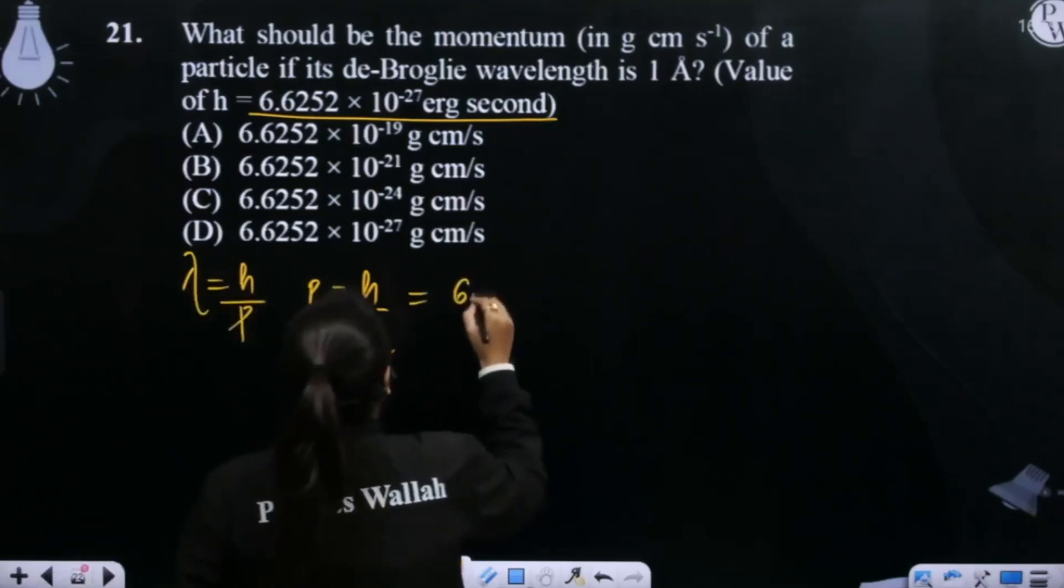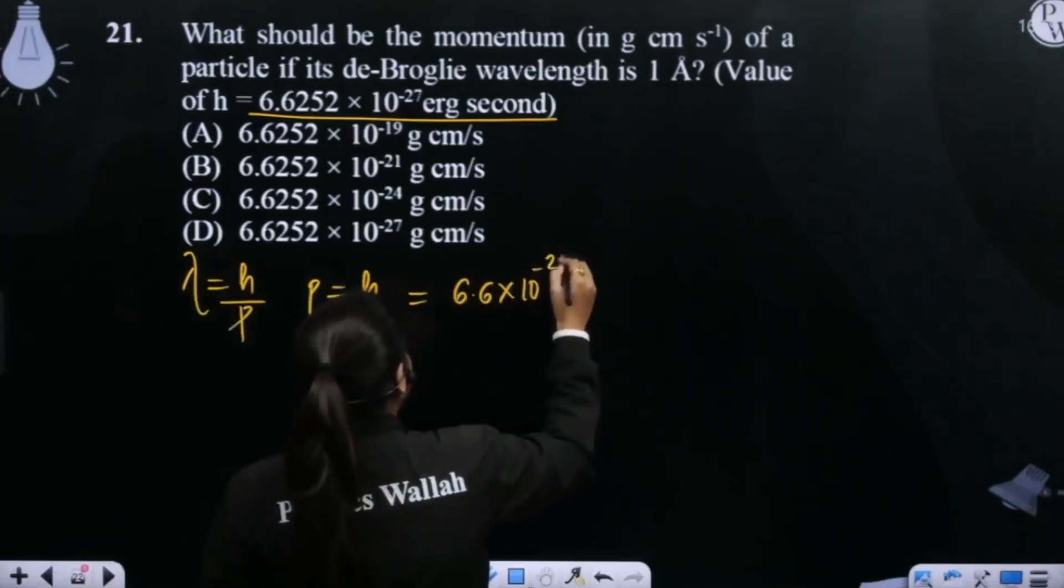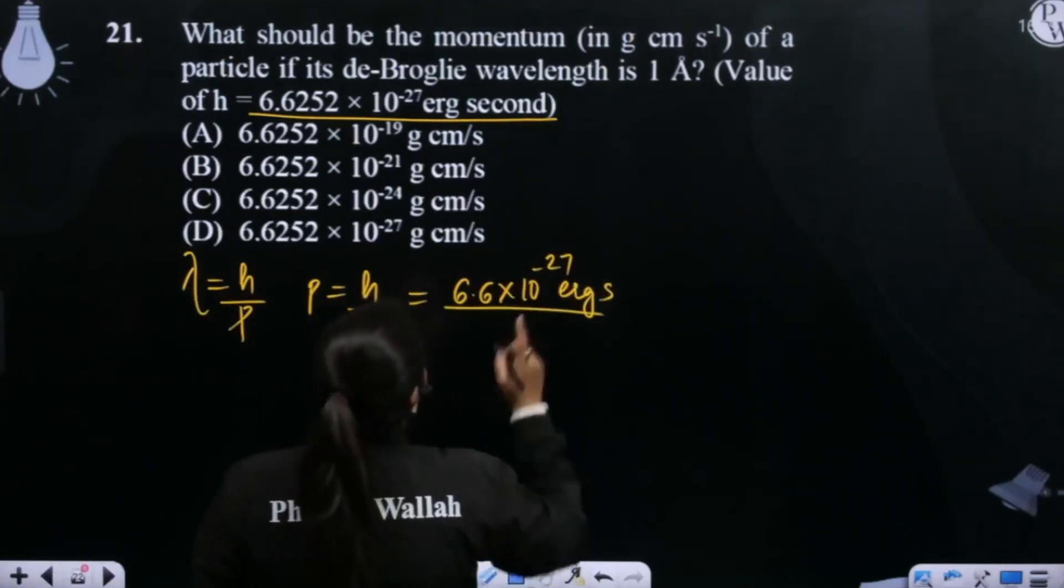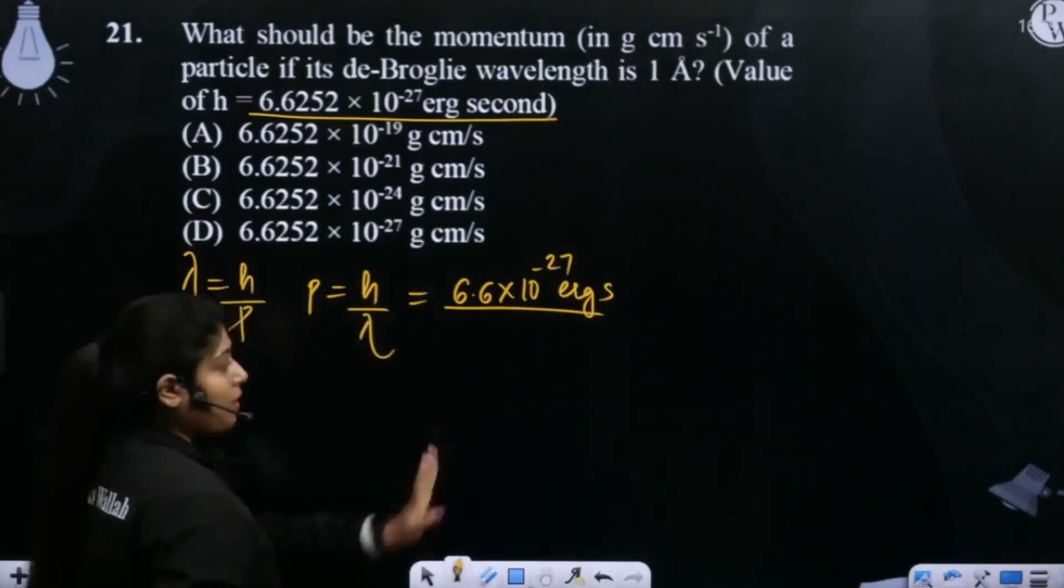h is 6.6 into 10 to the power minus 27 erg seconds. And the wavelength is how much is it? 1 angstrom. Now, see.